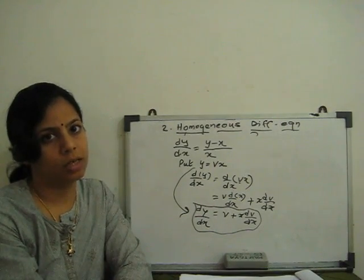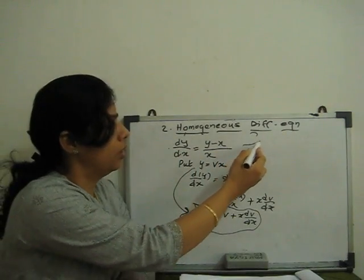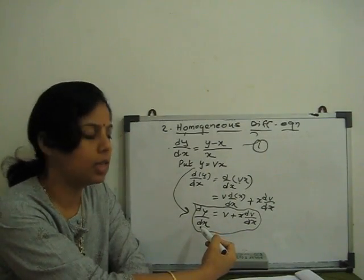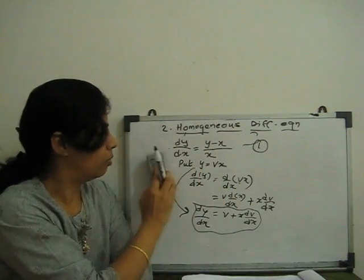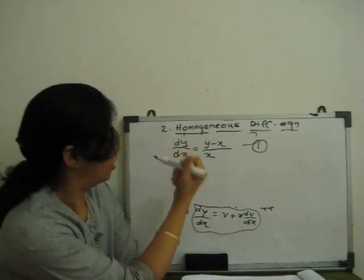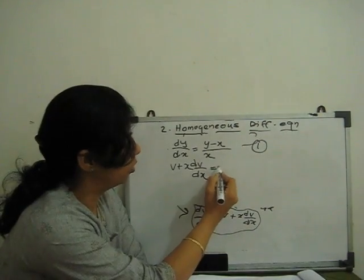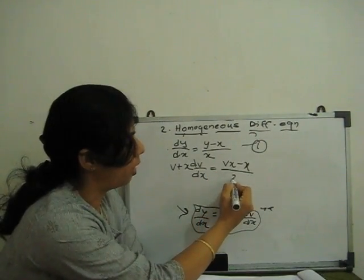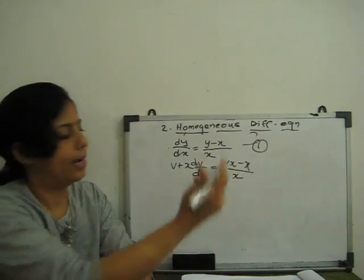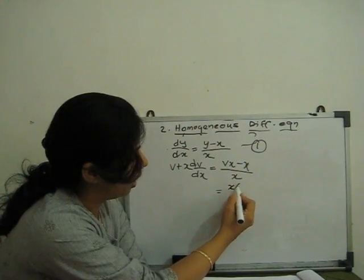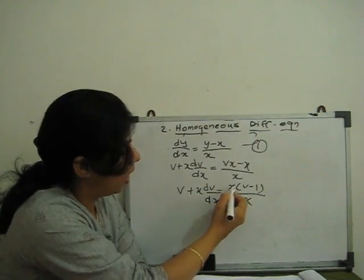In this equation, we substitute dy/dx: at the place of dy/dx we put v + x dv/dx, and at the place of y we put vx. So we have: v + x dv/dx = (vx − x) divided by x. After substitution and simplification, we separate x in the numerator: (v − 1) divided by x cancels with x. Now it becomes a variable separable equation in v and x.